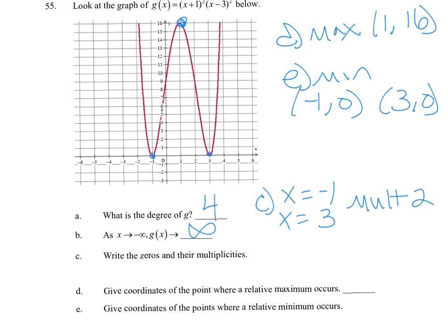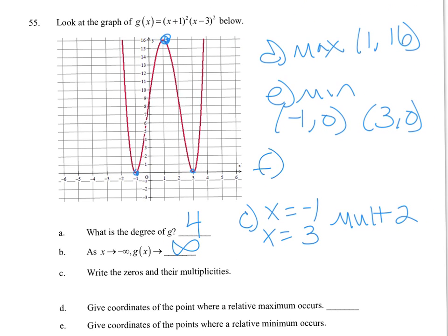When is the function decreasing? If I trace my graph left to right: decreasing, increasing, decreasing, increasing. So that is from negative infinity to -1 and from 3 to infinity. You can also write it as x is less than -1 and x is greater than 3.